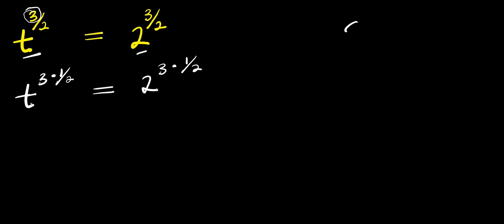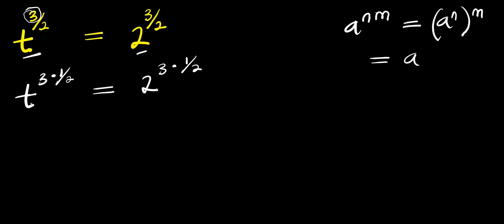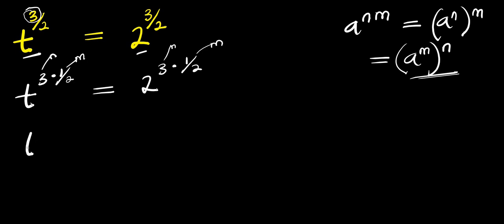Now if you have a to the power n times m, this equals a to the power n raised to the power of m. So let's transform it using this rule — we have t to the power 1 over 2, raised to the power of 3.